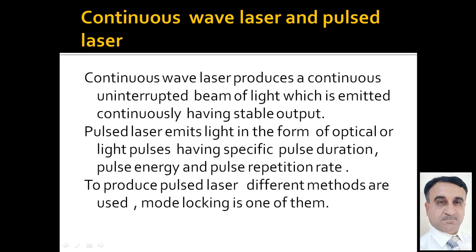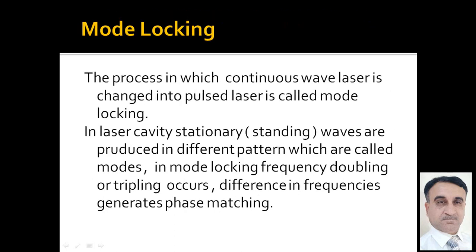A continuous wave laser produces a continuous, uninterrupted beam of light which is emitted continuously with stable output. A pulsed laser emits light in the form of optical pulses having specific pulse duration, specific pulse energy, and specific pulse repetition rate. In this topic we will discuss a method with which we can change a continuous wave laser into a pulsed laser.